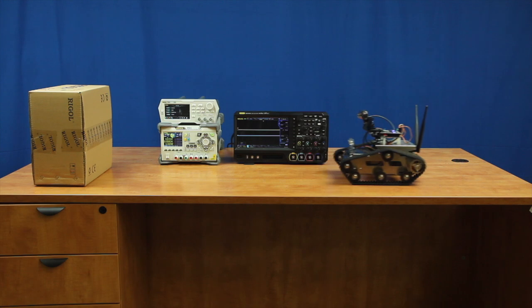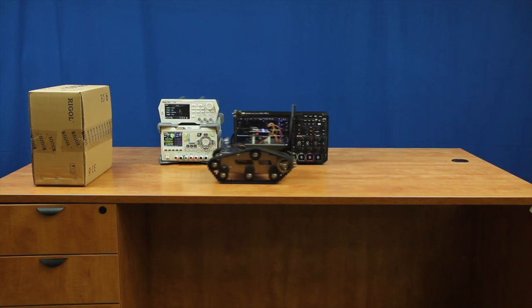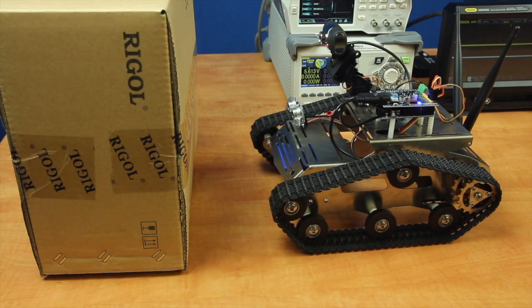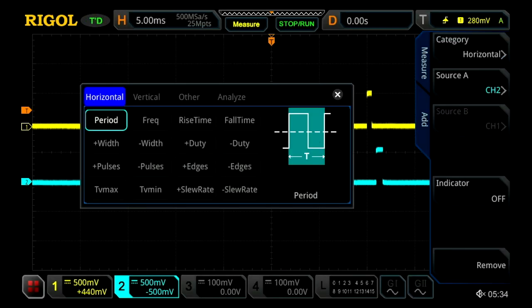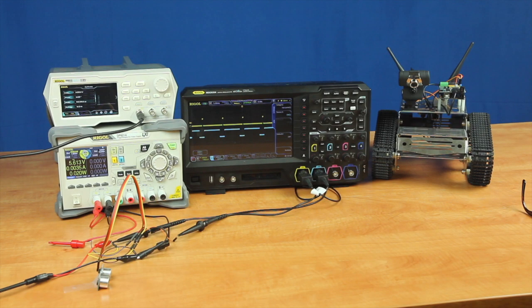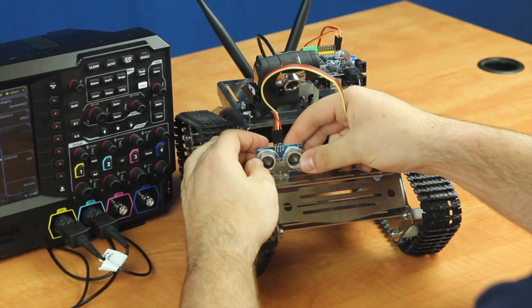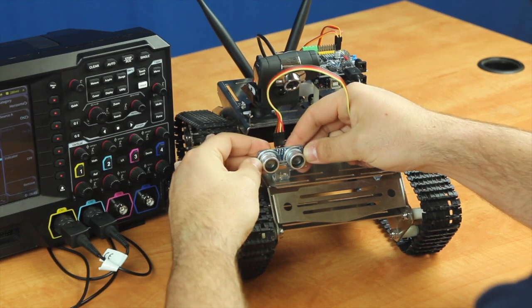Next we tested the robot's sensors, starting with the ultrasonic sensor which is meant to prevent the robot from crashing into different objects. To test the sensor we used an oscilloscope, and to power the sensor we used a power supply. To feed a test signal into the sensor to recreate an initial startup, we used a waveform generator to send a periodic pulse.